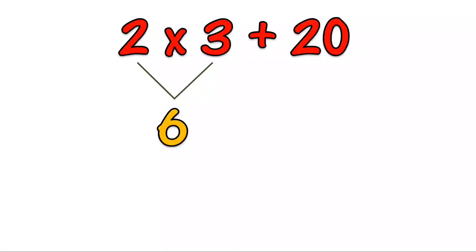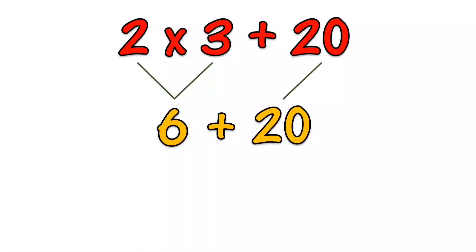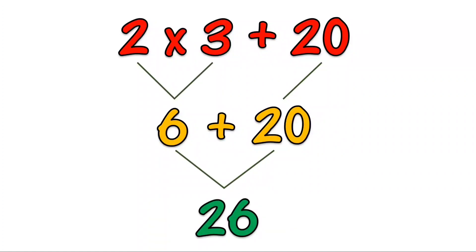Rule number 2: Add or subtract in order as they come from left to right. 6 plus 20 equals 26.